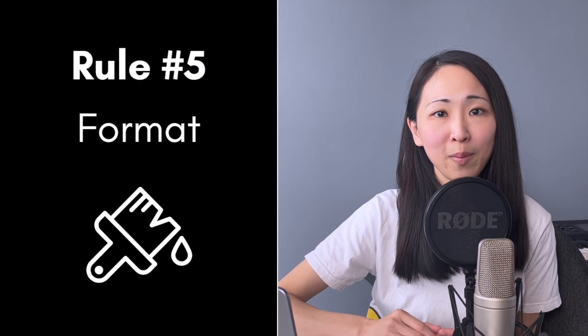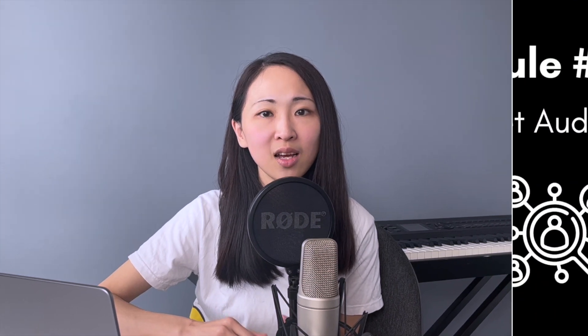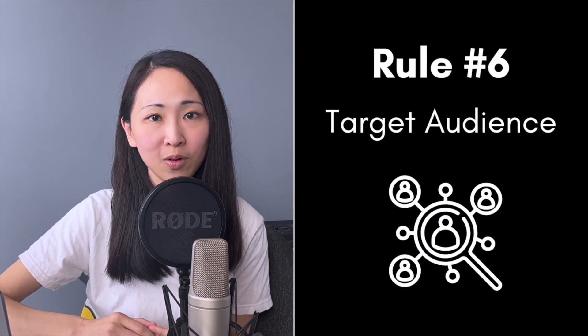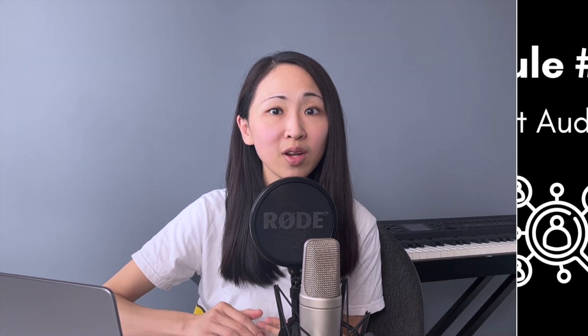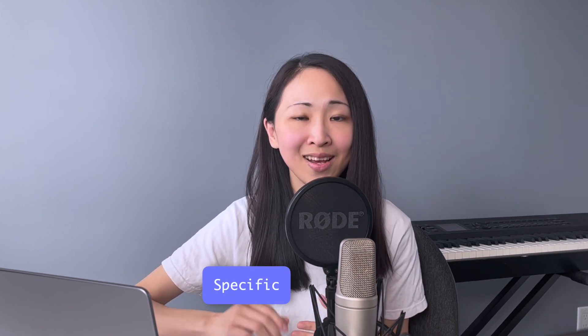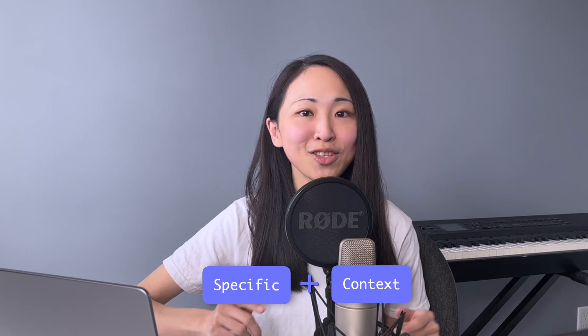Number five: format. What should be the format of the output? Is it bullet points, a table, or well-formatted code? Number six: target audience. Who is it for? Giving the target audience provides extra context to ChatGPT, and I've found it really useful, particularly for copywriting or SEO content research. Based on different tasks, you can adjust the inputs, but you should be specific and include context to get a meaningful response. Now let's jump into the prompts across different digital marketing use cases.